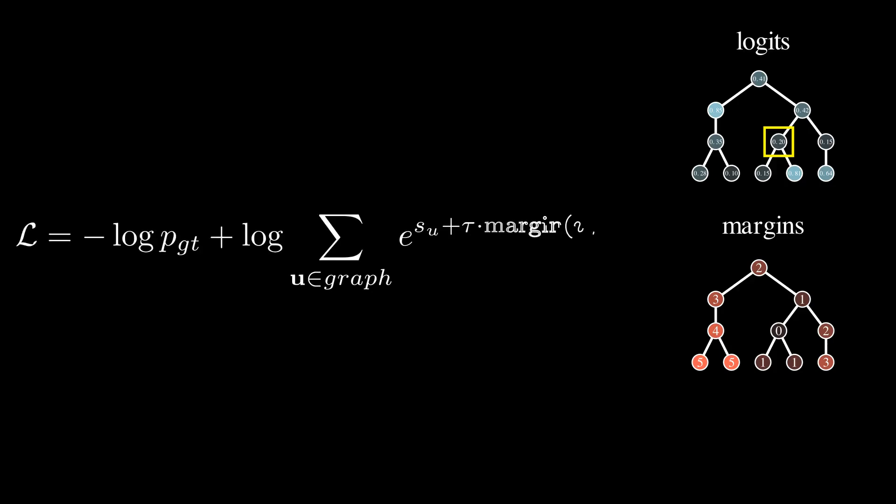The first term of the loss function is the negative log likelihood of the ground truth label. Additionally, we also compute the log sum exp function with an opposite sign, so it's minimized. You might recognize the log sum exp function from its use in certain calculations that require numerical stability.